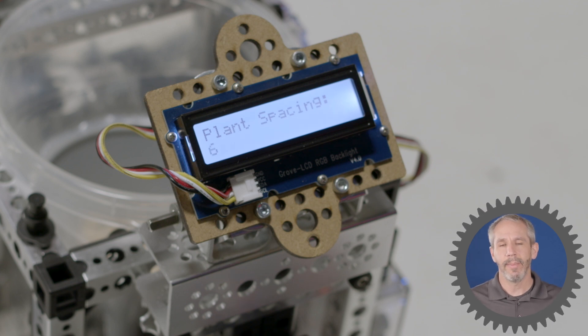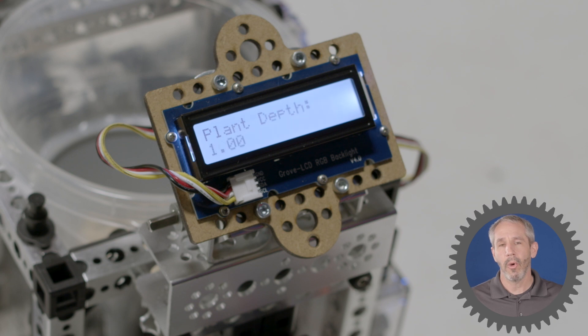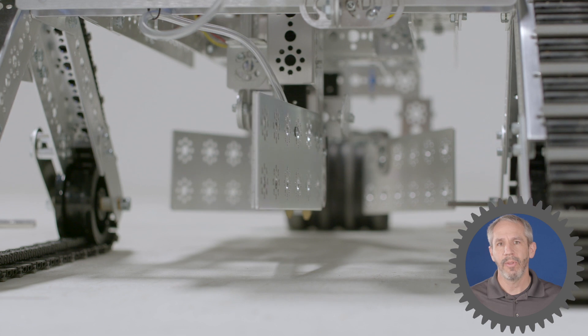And so with CropBot it was important for me to precisely control the depth that a corn kernel is planted into the ground and the spacing between corn kernels. So to do this, CropBot uses motor encoders.